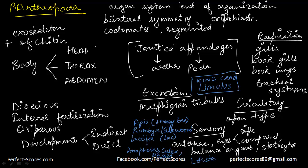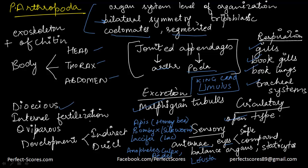To quickly revise arthropoda: they have an exoskeleton made of chitin and the body is composed of three parts — head, thorax, and abdomen. Organ system level of organization, bilateral symmetry, triploblastic, segmented body, and true coelom so they are coelomates. Jointed appendages — that is why they are called arthropods. Respiration through gills, book gills, book lungs, or tracheal system. Circulation is open type. Sensory organs include antennae, simple or compound eyes, balance organs or statocysts. Excretion through Malpighian tubules. They are dioecious with internal fertilization, oviparous, and development can be direct or indirect.